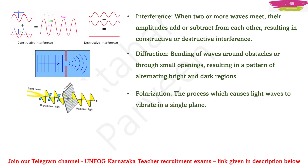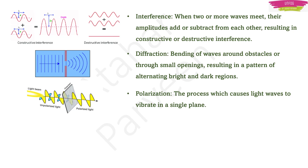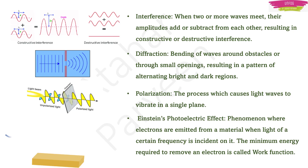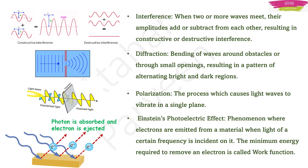Polarization is the process which causes light waves to vibrate in a single plane. Einstein's photoelectric effect is a phenomenon where electrons are emitted from a material when light of a certain frequency is incident on it. The minimum energy required to remove an electron is called the work function.